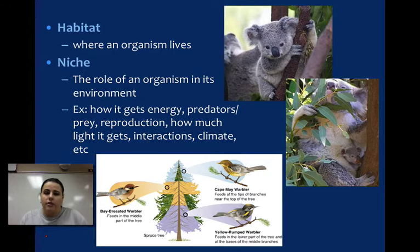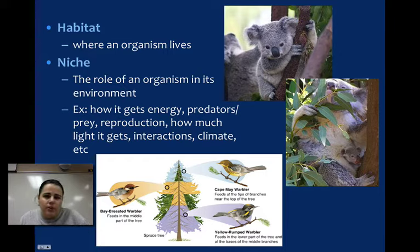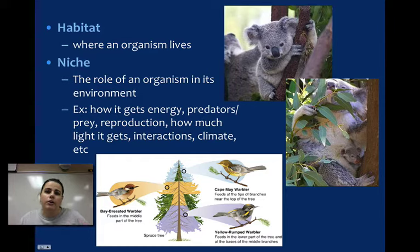Not all parts of their niche can overlap, but some niches do overlap. In this bottom picture, we have some different birds — different species of warblers — and they all like to nest in trees. But their niches are very specific: one species nests at the top, one in the middle, and one at the bottom, so there's competition for these different areas. With a koala, their habitat is in Australia, and they have a very specific niche that no other organism fills because it eats eucalyptus leaves for its nourishment. So that's habitat and niche.